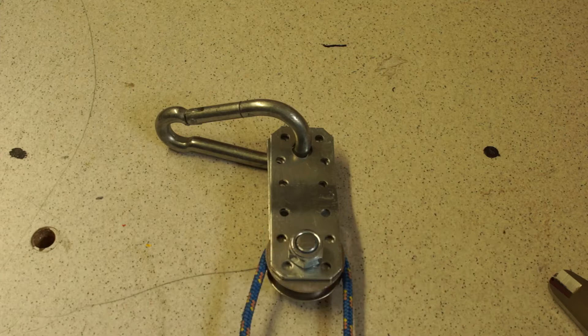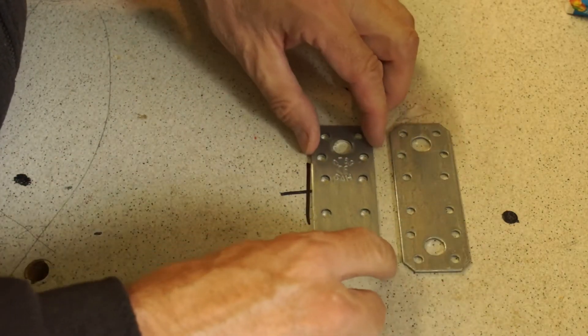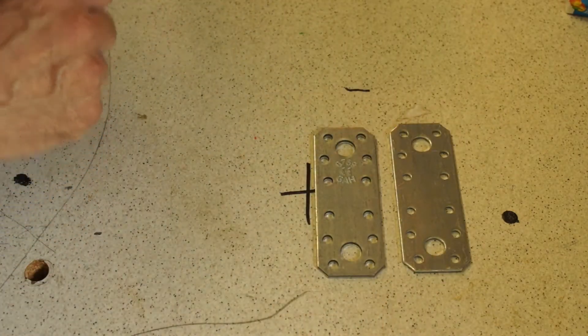Today we will build small rope pulleys. We will build them from standard parts which you can get at Amazon or your local hardware store.